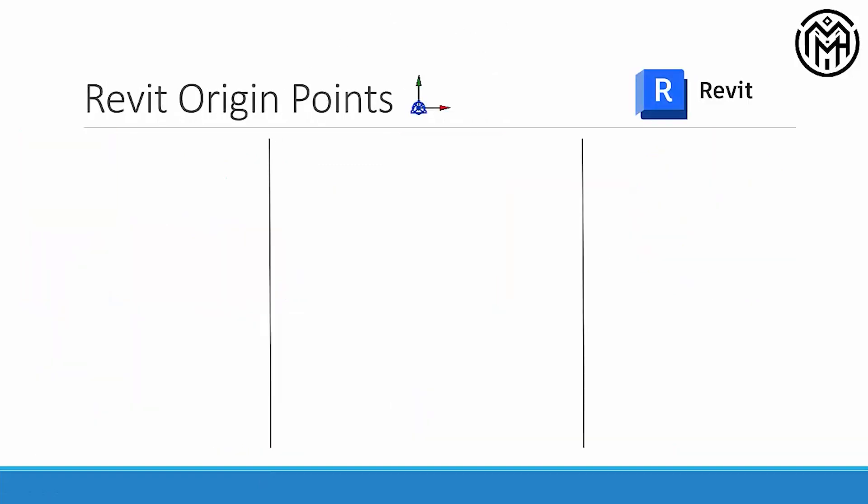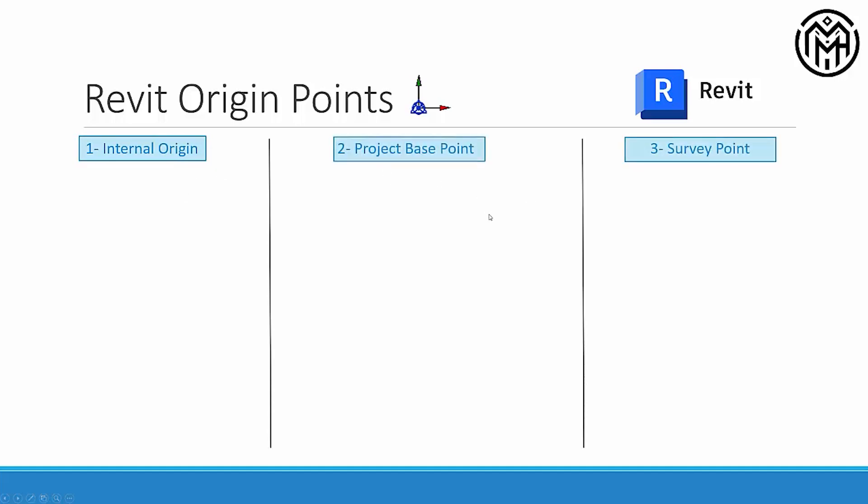Before we jump to Revit, I have to introduce you to the Revit origin points. It's very important to know about them and the differences between them before we move to any practical explanation. Revit actually has three origin points, all three are different and serve different purposes. The first one is the internal origin, the second one is the project base point, and the third one is the survey point.